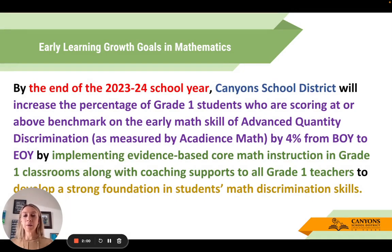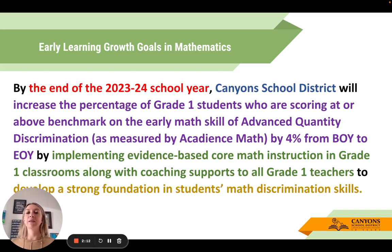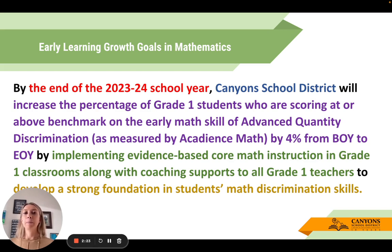One thing I want to bring back is our early learning growth goal in mathematics. By the end of this school year, we are accountable to the state to increase the percentage of first grade students scoring at or above benchmark on the early math skill of Advanced Quantity Discrimination, or AQD, on the ACADiance Math by four percent from beginning of year to end of year.